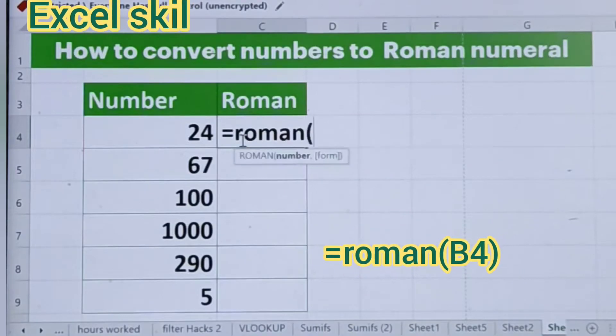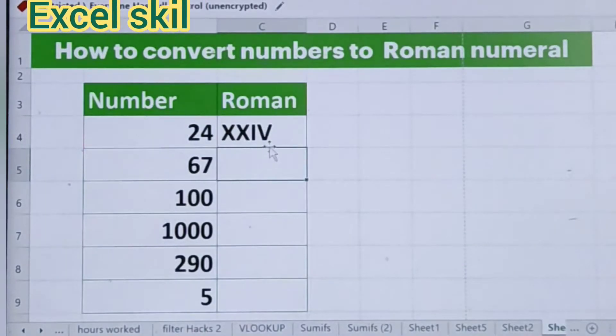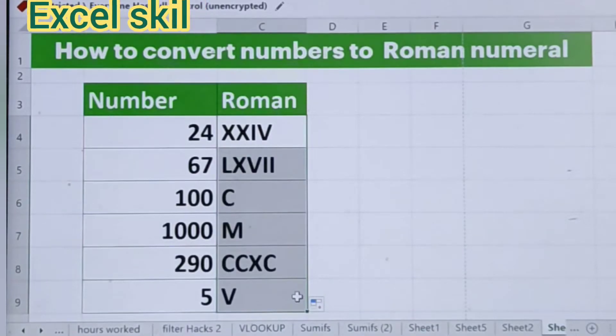Open the parenthesis, choose the number, close the parenthesis, and hit Enter. You could see the numbers have been changed to Roman numerals with the function called ROMAN. Isn't it nice? You can present this data.